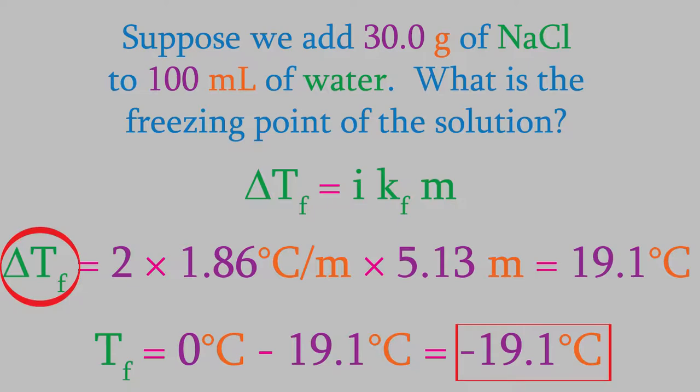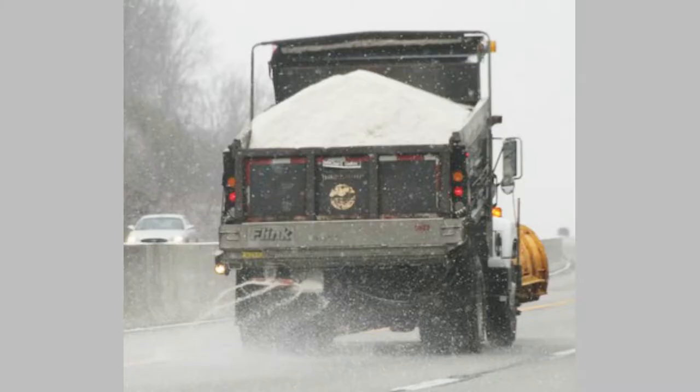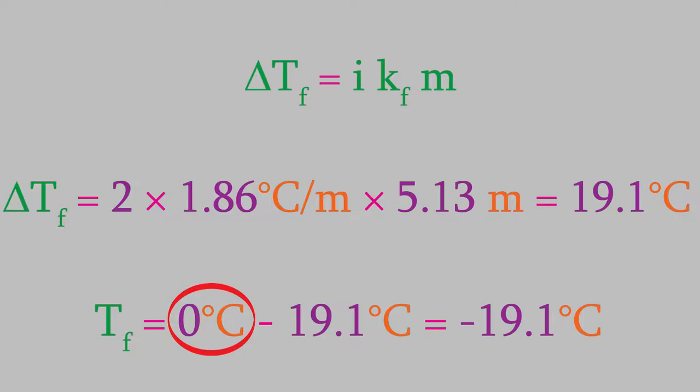By the way, the van't Hoff factor can help you make a good choice when you buy salt to melt the ice in your driveway during the winter. The reason why salt melts ice is because of freezing point depression. As we just mentioned, water usually freezes at 0 Celsius. But when we add salt, the freezing point goes down. That means it must get much colder before the water will actually freeze. In the previous problem, the new freezing point became minus 19.1 degrees. That means if the temperature is anything between 0 and minus 19.1, adding that amount of salt to our ice will cause the ice to melt.